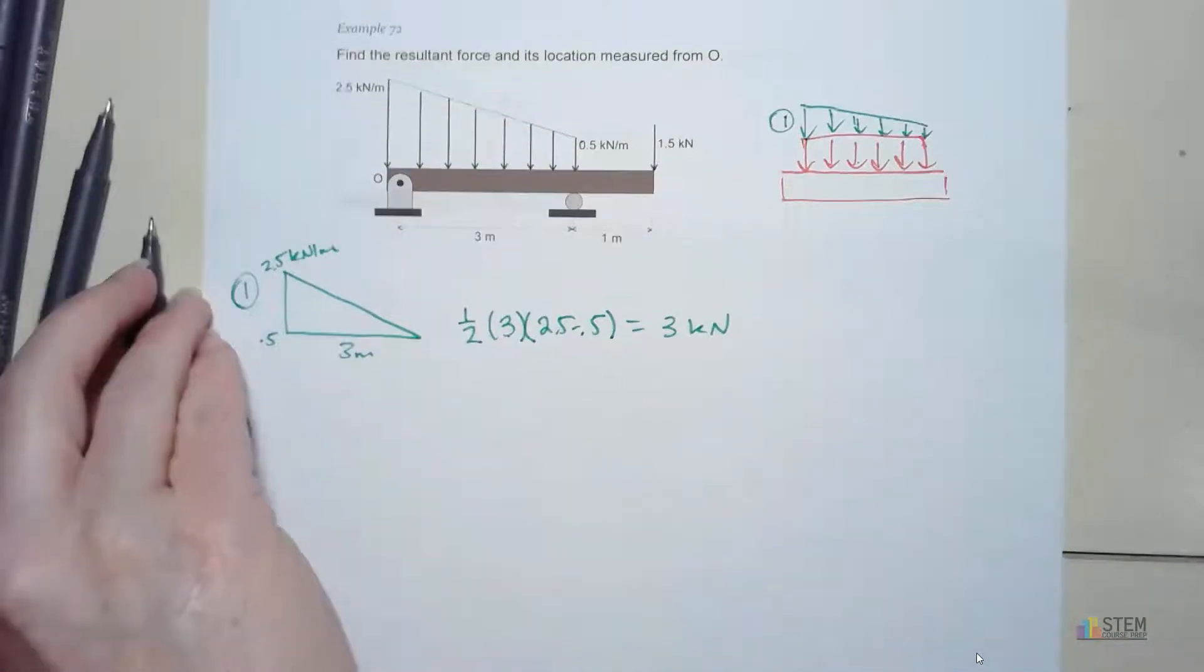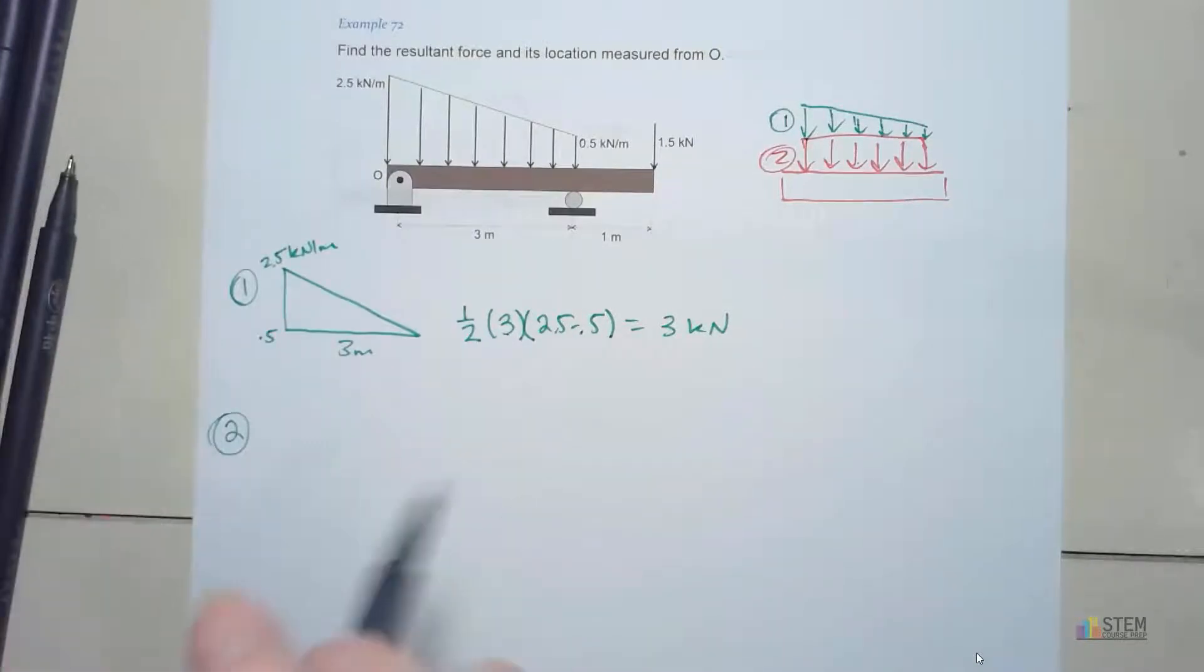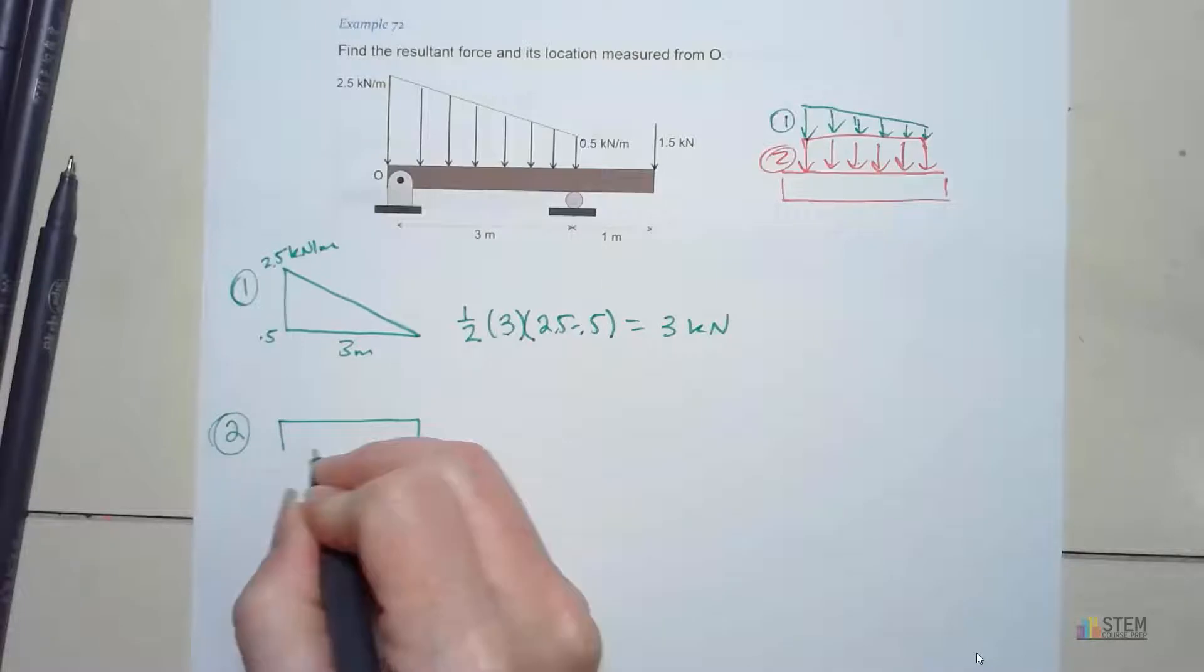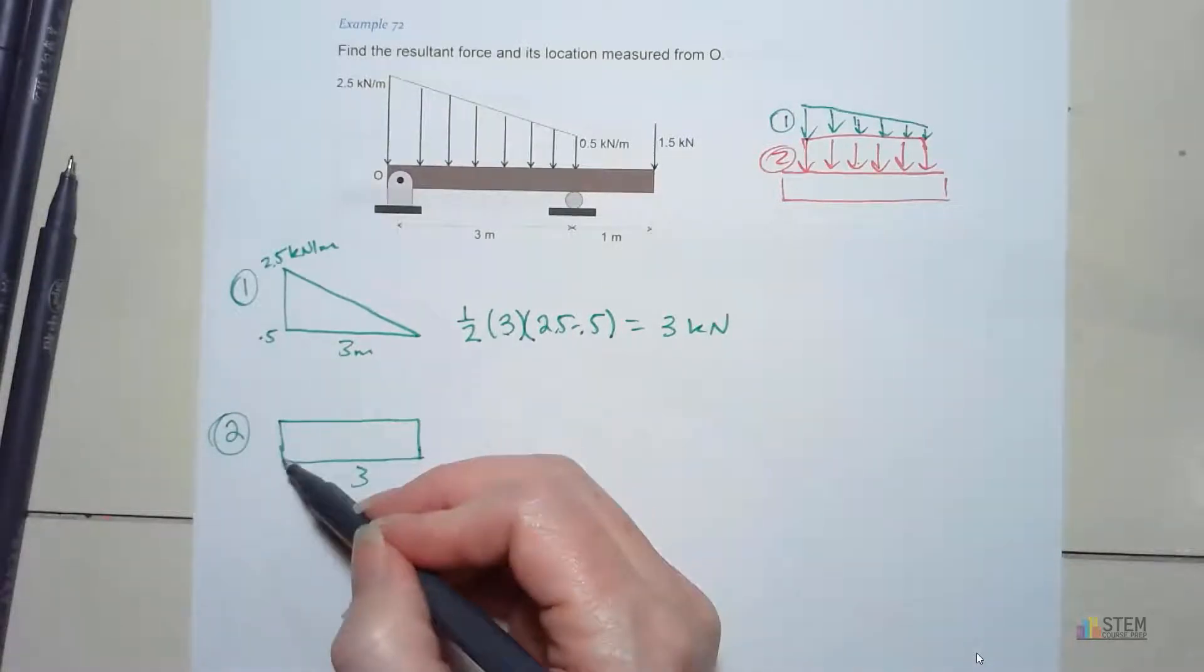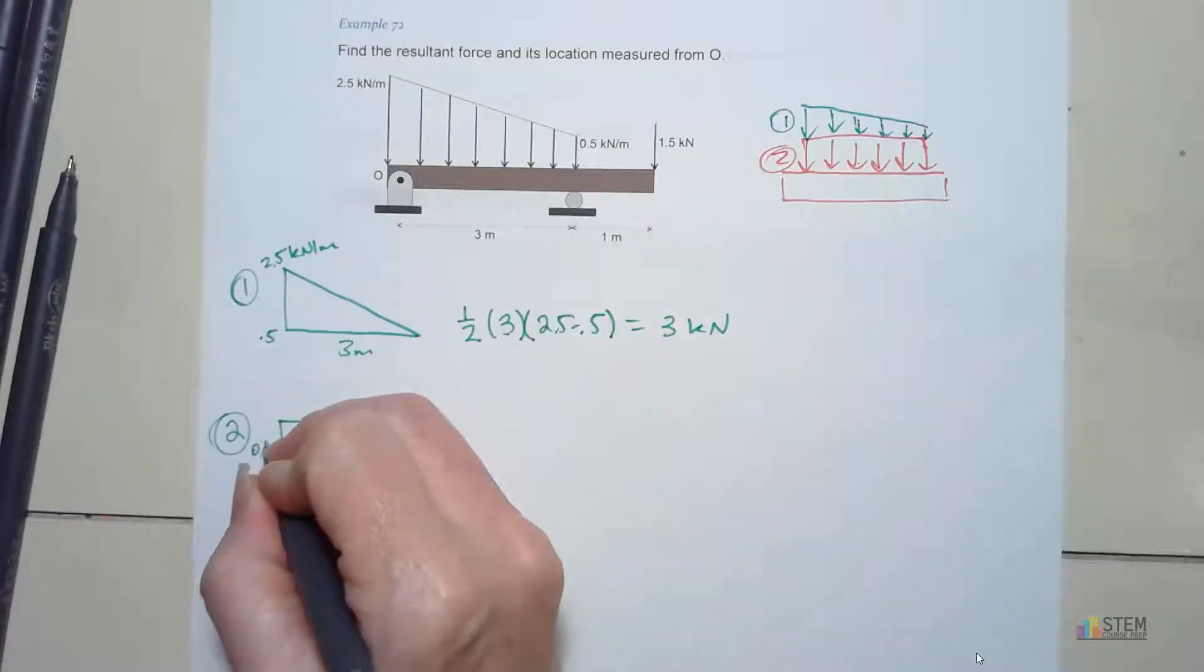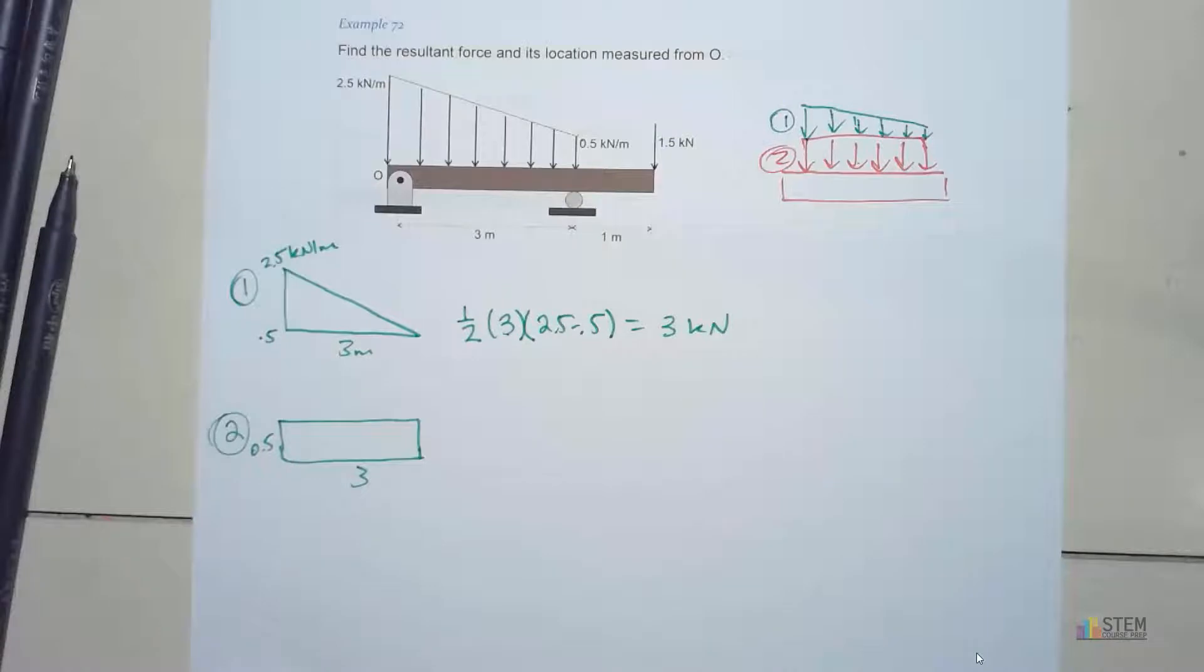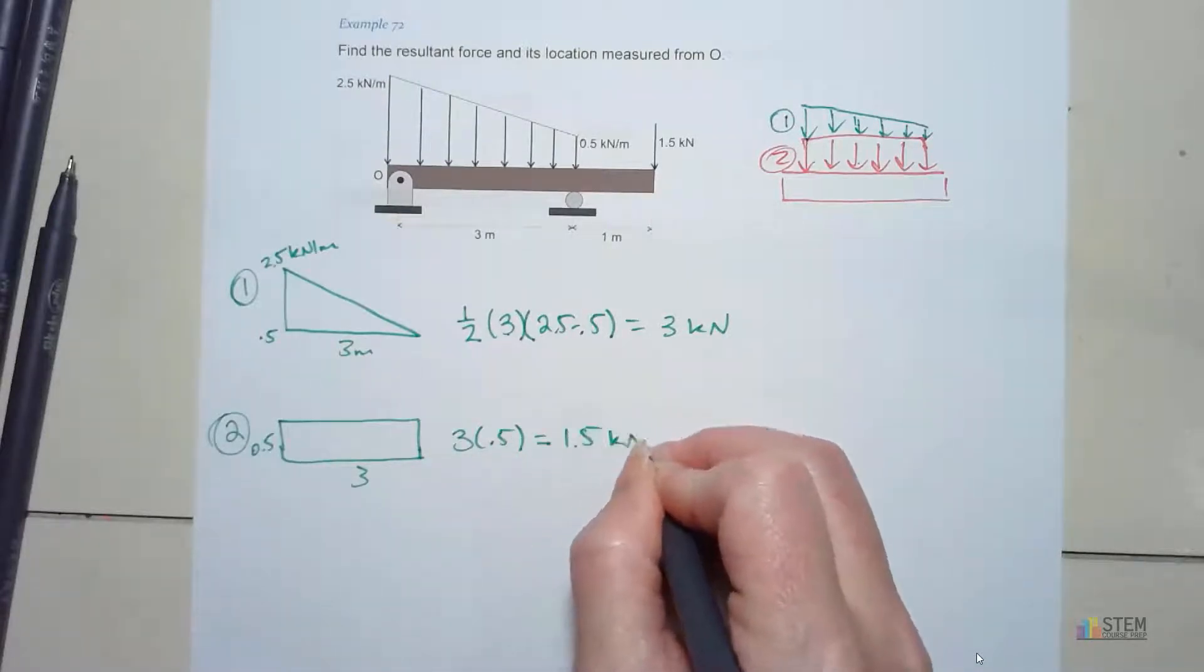For part 2, we're going to do this one, the rectangle. So our rectangle, let's look at that. The length of it is 3, and then this height, notice we're stopping at 0.5 here, is going to be 0.5. Now we want the area under the curve, so that's just going to be the area of this rectangle. We're just going to have 3 times 0.5, which gives you 1.5 kilonewtons.